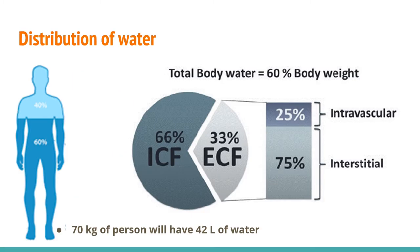Let's see the distribution of water. Water is a major component of the body. An adult human contains about 60% of water. If an adult weighs 70 kg, then approximately they will have 42 liters of water. This 42 liters of water is distributed in two compartments: intracellular fluid, which contributes about 66%, and extracellular fluid, which contributes about 33%. In extracellular fluid, 25% is present in the intravascular compartment and 75% in the interstitial fluid compartment.